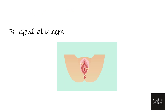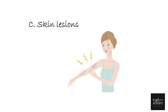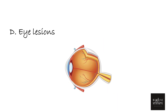Genital ulcers are another common manifestation, seen in about 60 to 80 percent of cases. They could be seen around the vulva and labia in females, and on the scrotum in males. Skin lesions are another common feature and could be seen in the form of erythema nodosum or acneiform lesions. Ocular involvement is quite common in Behcet's disease and could be in the form of anterior or posterior uveitis, or sometimes retinal vasculitis.